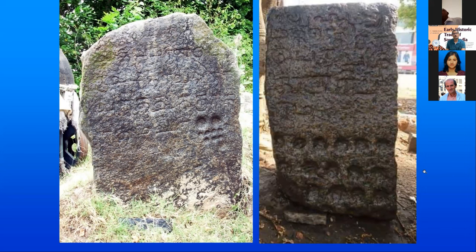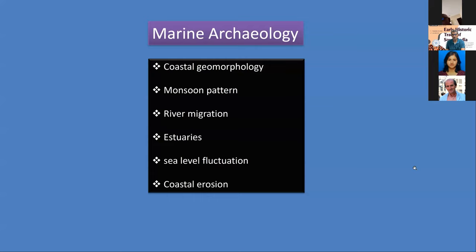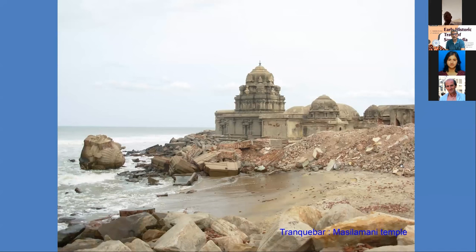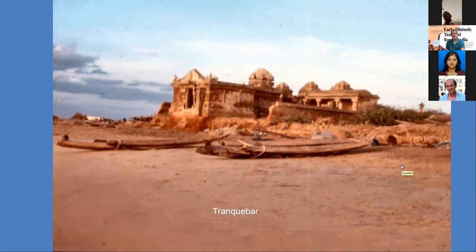Even an illiterate person could understand by seeing the depressions how much distance they needed to travel to reach the destination — they cleverly used milestones during that period. Marine archaeology on the coastline is being done by the National Institute of Oceanography, National Institute of Ocean Technology, Indian Maritime University, and the Archaeological Survey of India — at places like Mahabalipuram, Poompuhar, and near Korkai. Marine archaeology and coastal geomorphology help us understand monsoon patterns, river migration, estuary movements, sea level fluctuation, and coastal erosion.